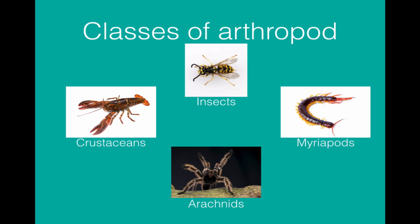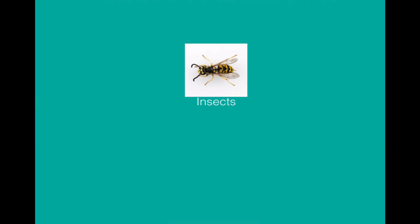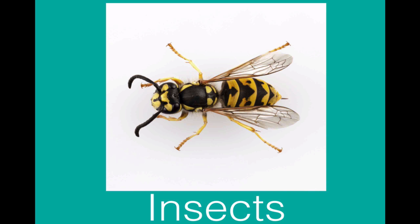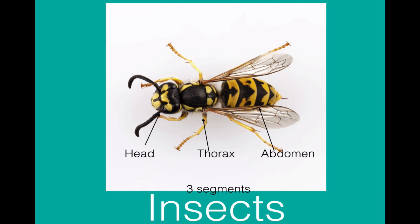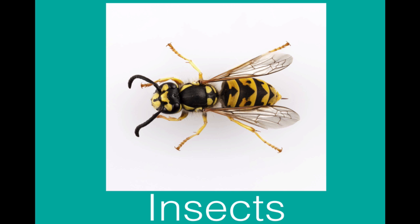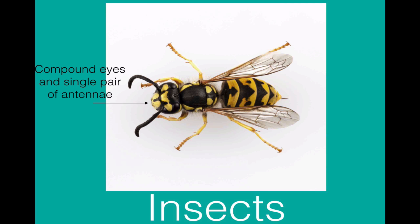You need to know some details about each different class of arthropods. We will look at insects first. Insects can be identified by the fact that they have three body segments — a head, a thorax, and an abdomen. In this wasp it is fairly obvious where the three segments are, though sometimes it is harder to see. Insects have wings, or at least some members of the species have wings, such as male drone ants. They have compound eyes and a single pair of antennae used to sense chemicals in their environment.